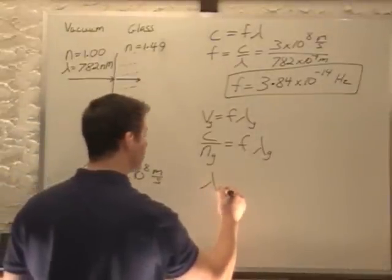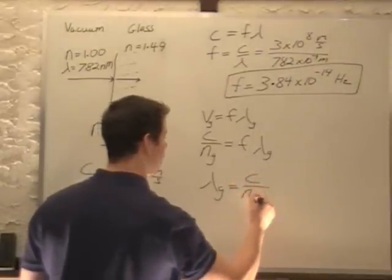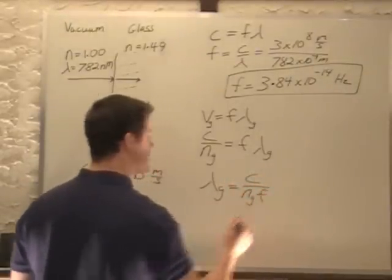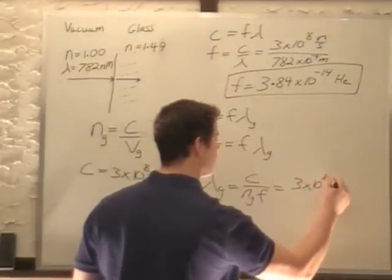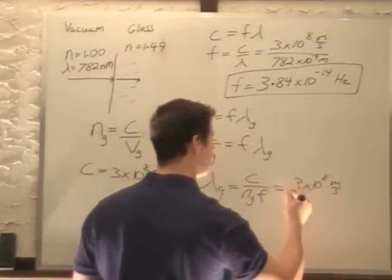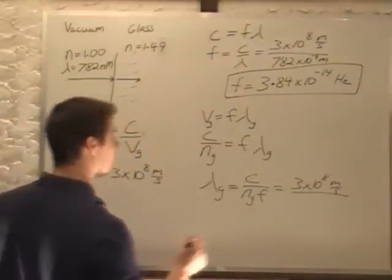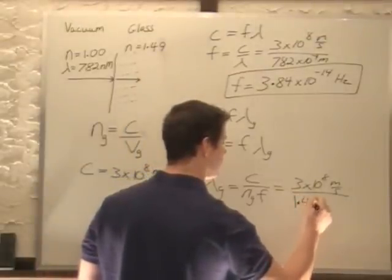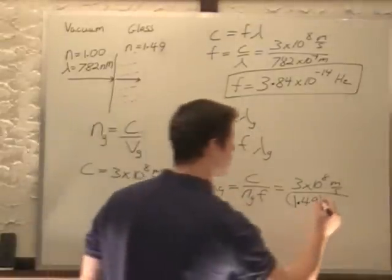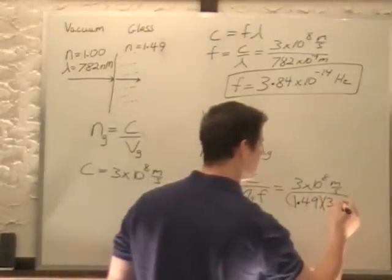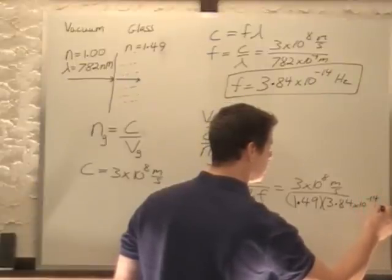Solving for wavelength in glass, wavelength in glass equals c over n glass times f. Plugging in values: 3 times 10 to the 8th meters per second divided by the index of refraction 1.49, and a frequency of 3.84 times 10 to the 14 hertz.